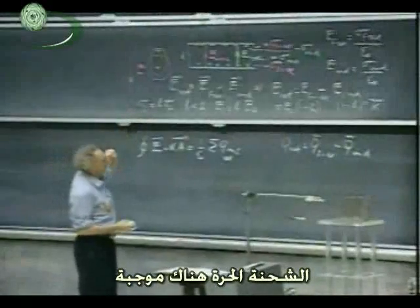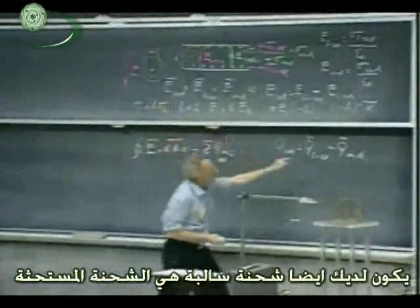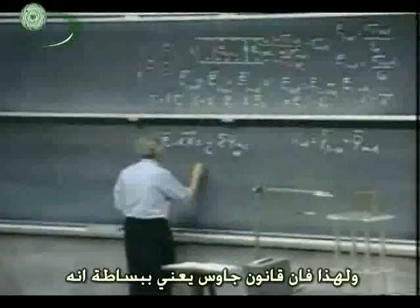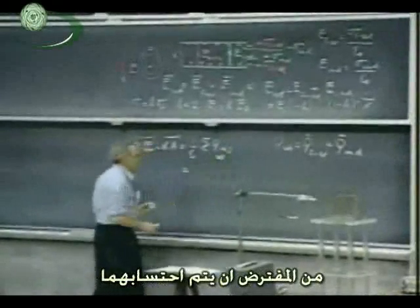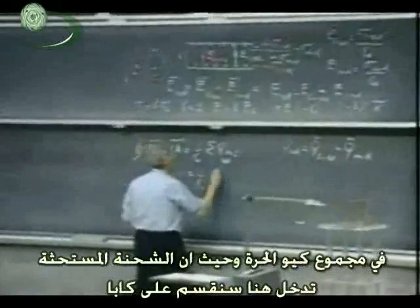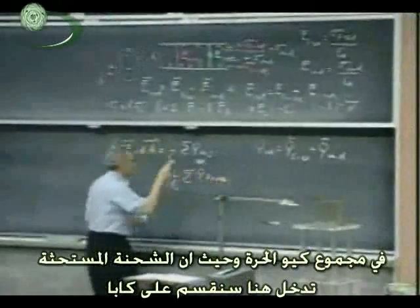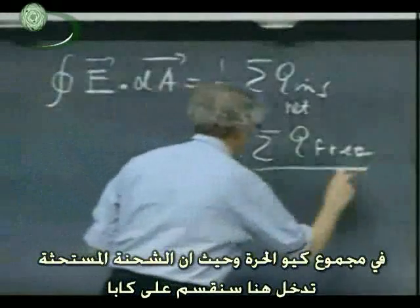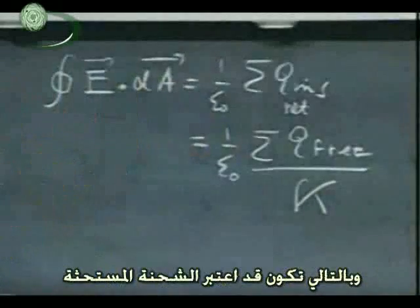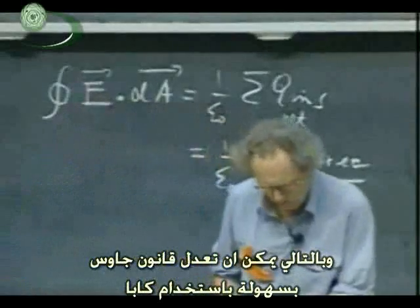Positive, there is plus, and at that same place, if you have your Gaussian surface at the top, you have the negative charge Q induced. And so therefore, Gauss's law simply means that you have to take both into account, and so therefore you can write down one over epsilon zero times the sum of Q free, but now you have to make sure that you take the induced charge into account, and therefore you divide the whole thing by kappa. Then you have automatically taken the induced charge into account. So you can amend Gauss's law very easily by this factor of kappa.